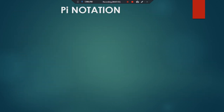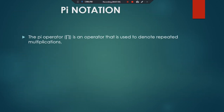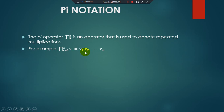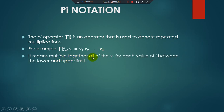Pi notation is another important topic commonly used in econometrics. The pi operator is used to denote repeated multiplication, just as sigma denotes repeated addition. For example, pi from i=1 to n of x_i means multiply together all values of x from x1 to x2 up to x_n — that is, multiply together all the x's for each value of i between the lower limit one and the upper limit n.